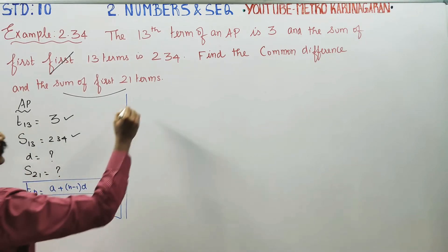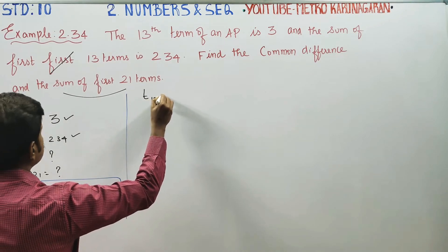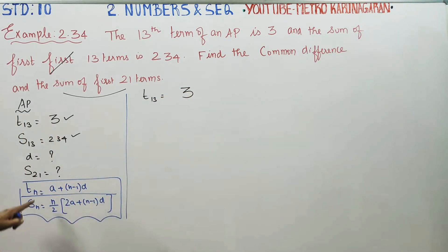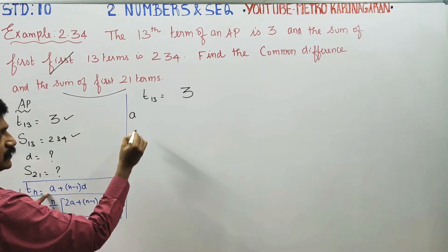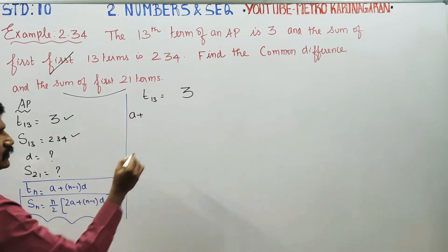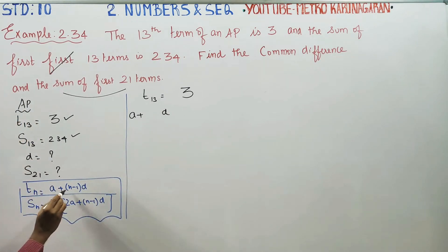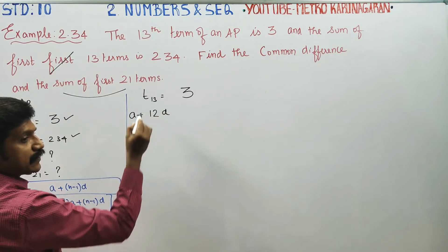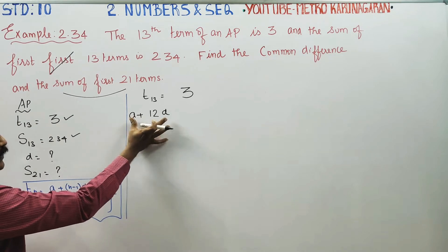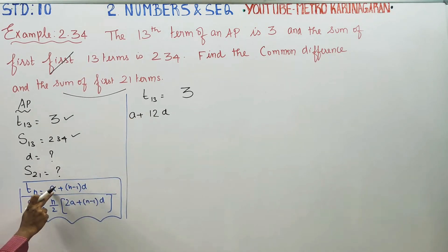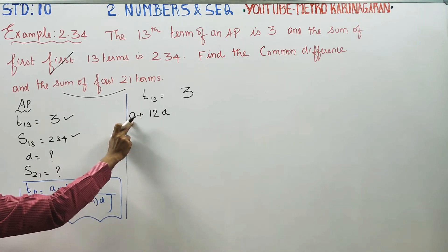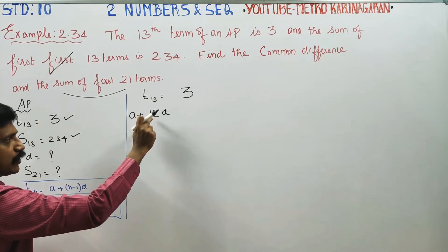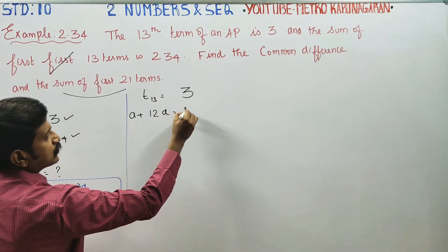T13 is equal to 3. Using the formula: A plus 12D equals 3. This is the T13 formula.